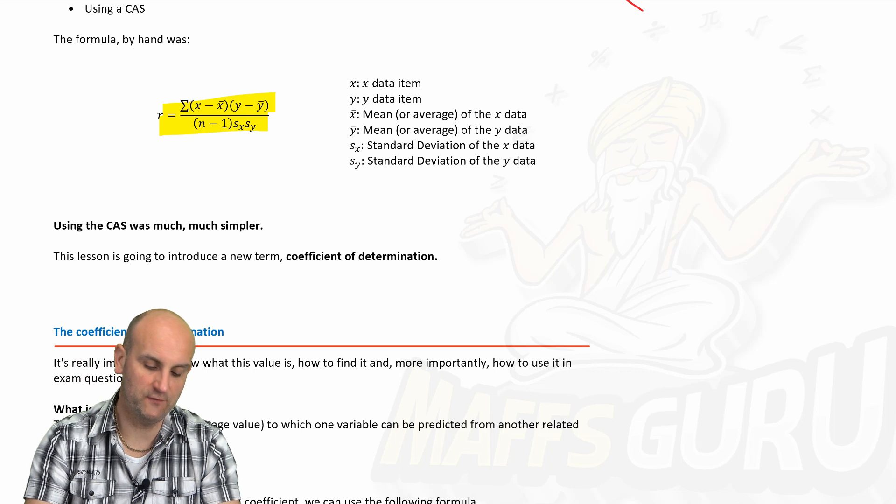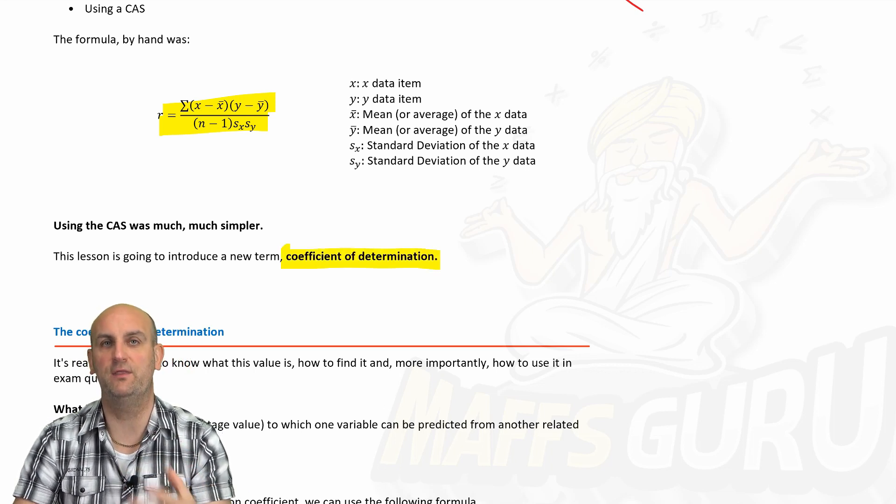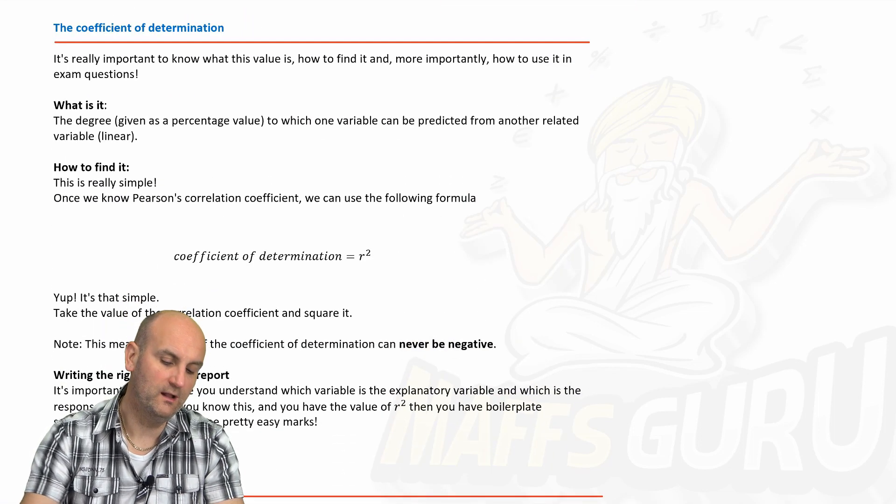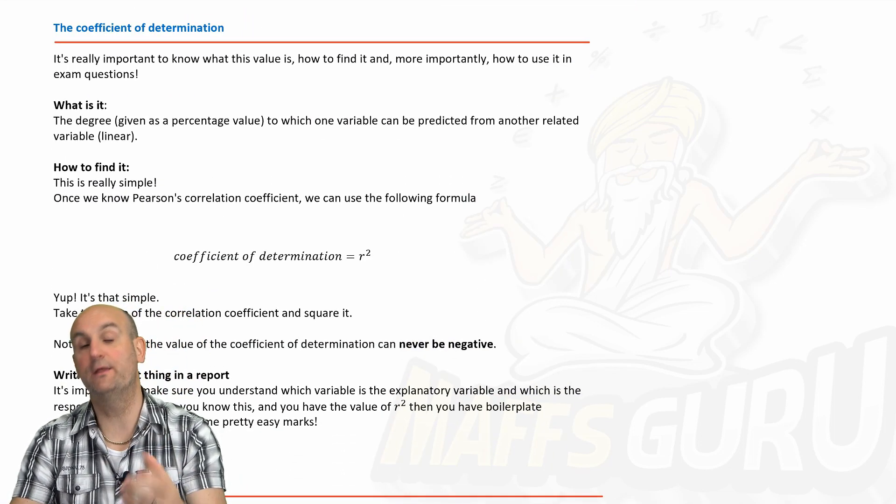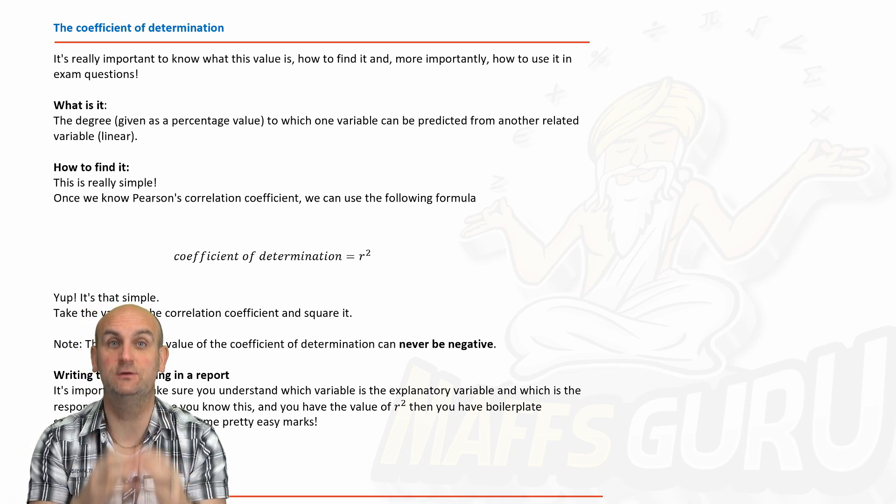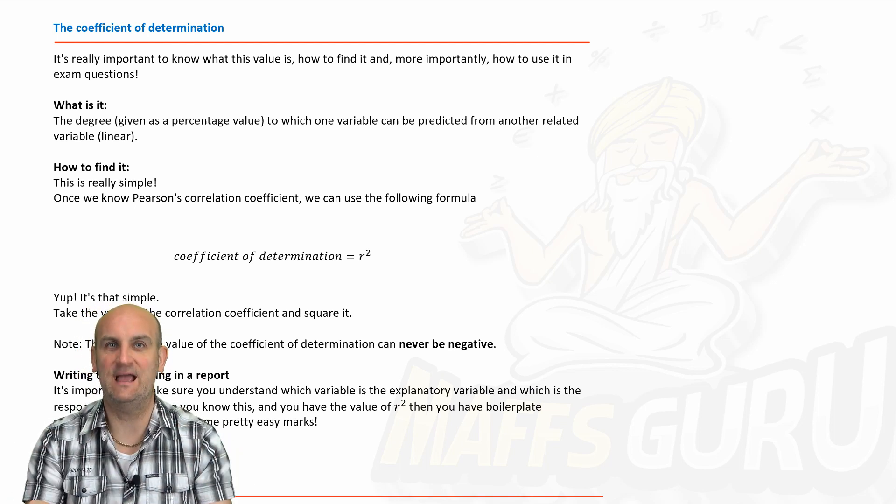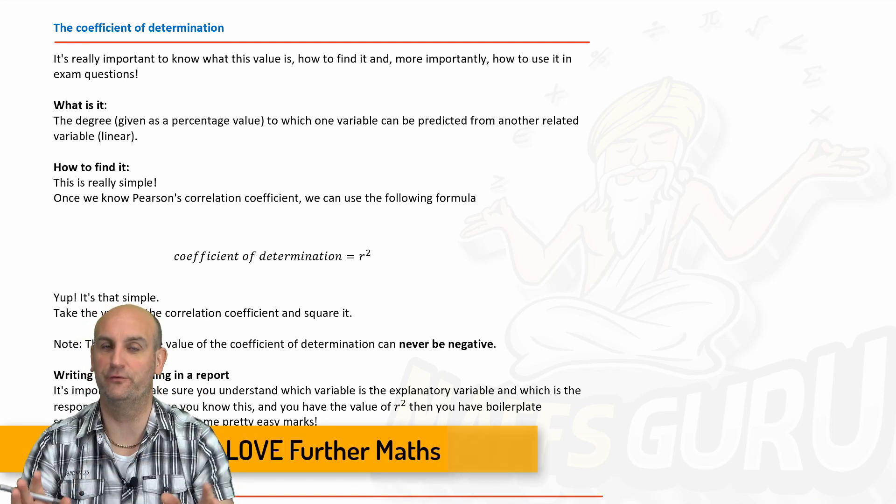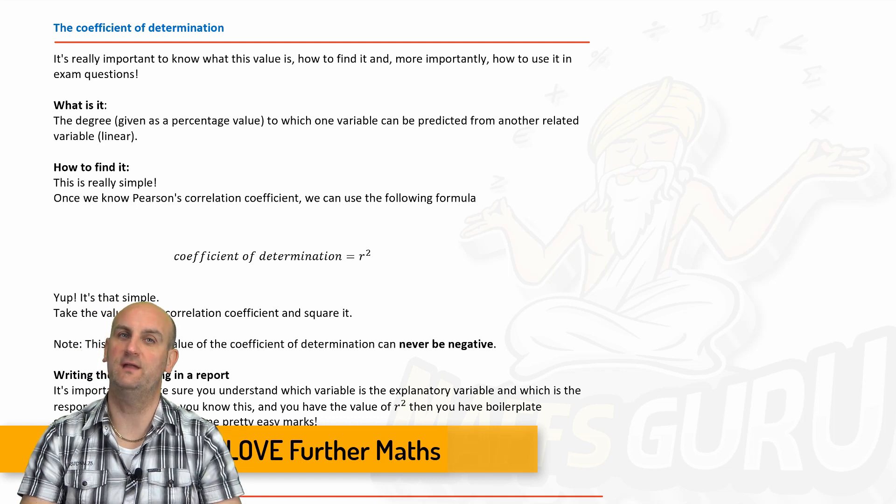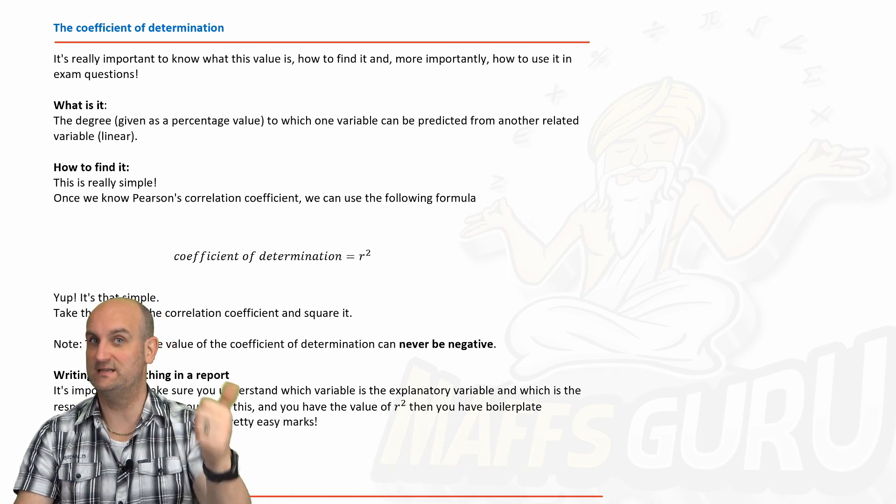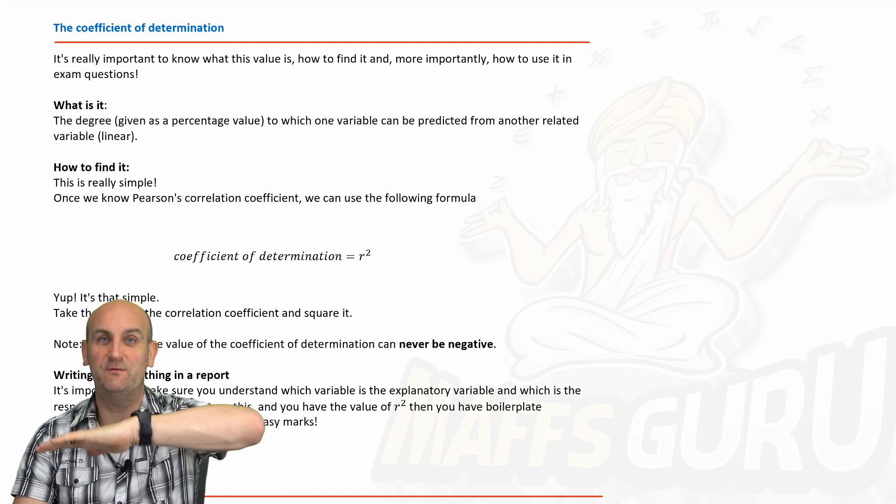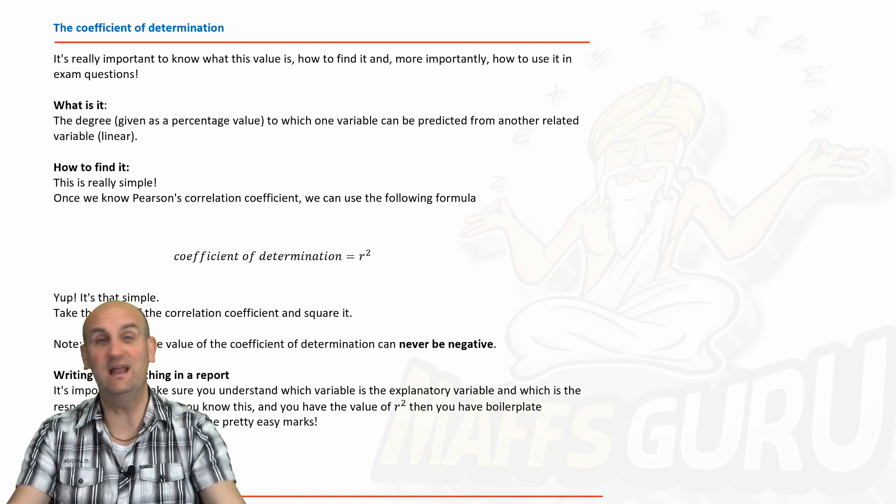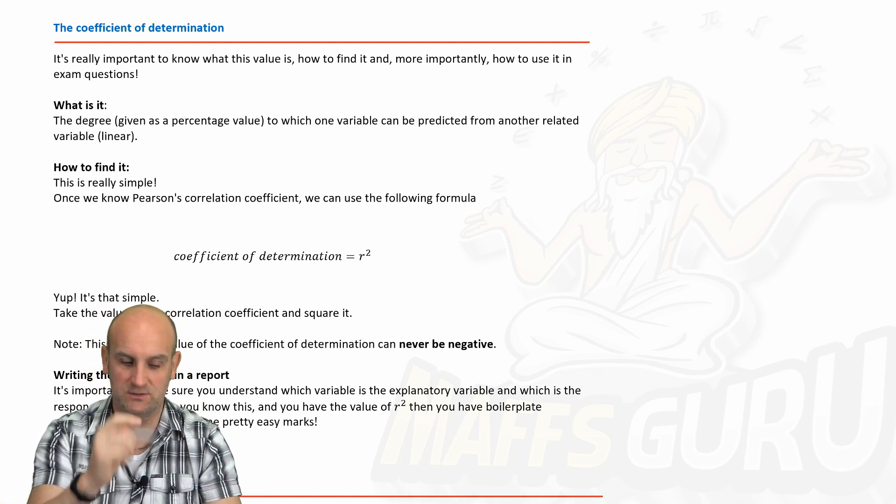Now, we're going to move on to the coefficient of determination. This is just another thing we can use to analyze some data. Now, the language here is important, and the good news is it's scaffolded. There is a sentence you can use in your exams and in your SACs that you've just changed three things. Now, to me, that sounds awesome. You've just got to make sure you understand which three things they are. One of them is a percentage, one of them is the name of the explanatory variable, and one of them is the name of the response variable. Really? It's that simple. It is that simple, but you've just got to get it right.